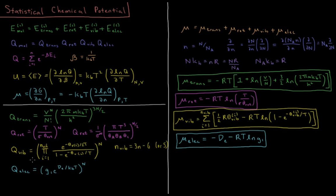For vibrations, we have for each individual vibrational mode: the vibrational partition function is e to the minus (theta_vib/2T) over 1 minus e to the minus (theta_vib/T). You multiply these together for each vibrational mode. For a nonlinear polyatomic, you have 3N minus 6 vibrational modes; for a linear polyatomic, you have 3N minus 5.